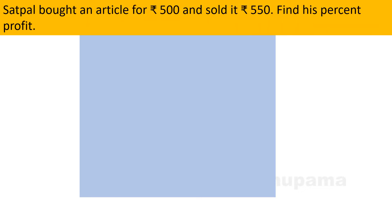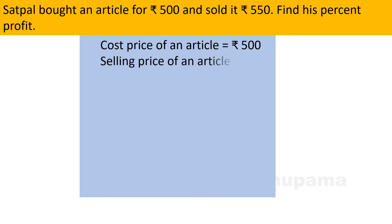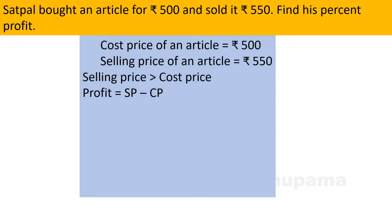Let us do one question to understand this. Satpal bought an article for rupees 500 and sold it for rupees 550. Find his percent profit. The cost price is rupees 500 and selling price is rupees 550. Since selling price is greater than cost price, there is a profit. Profit equals selling price minus cost price, that is 550 minus 500, which is rupees 50.